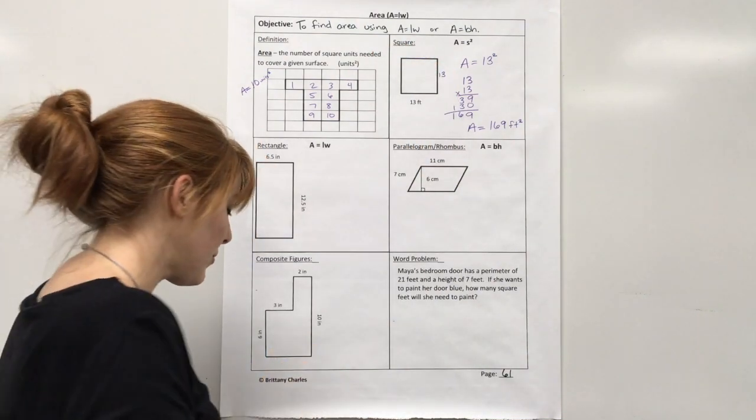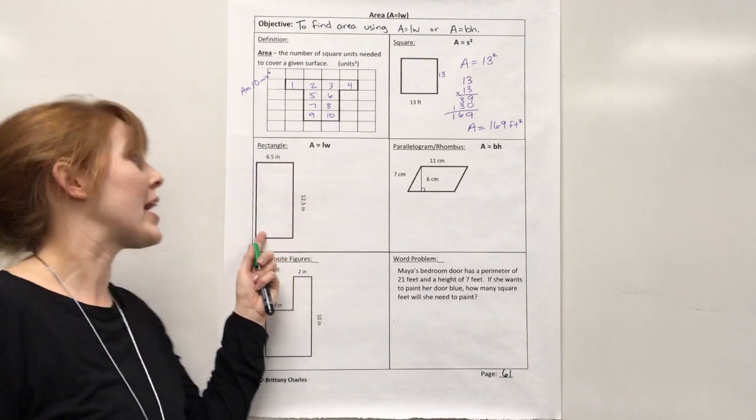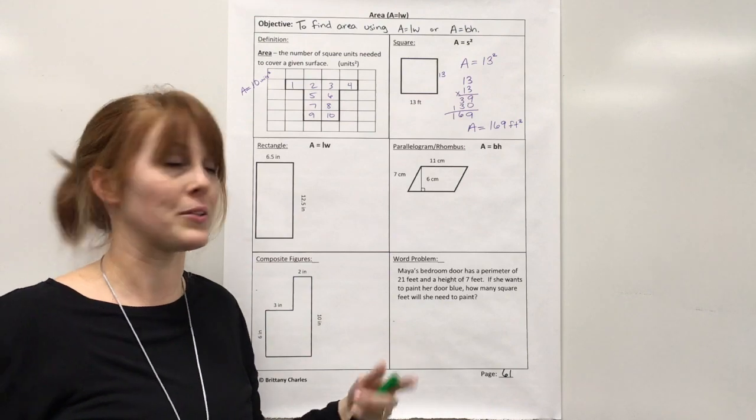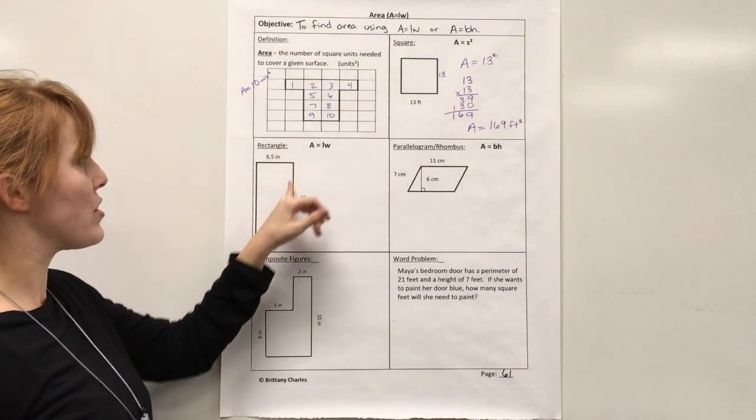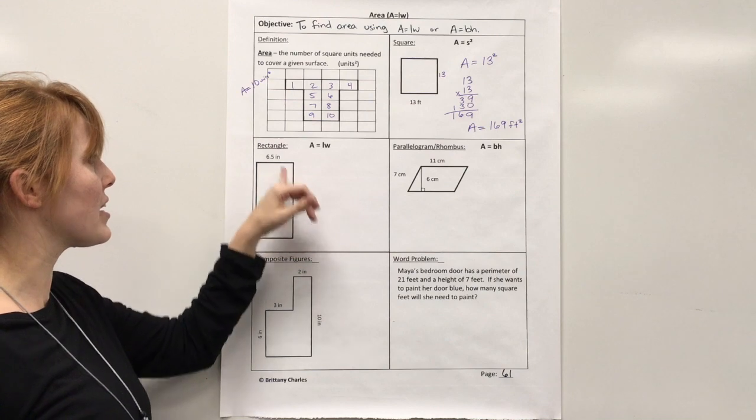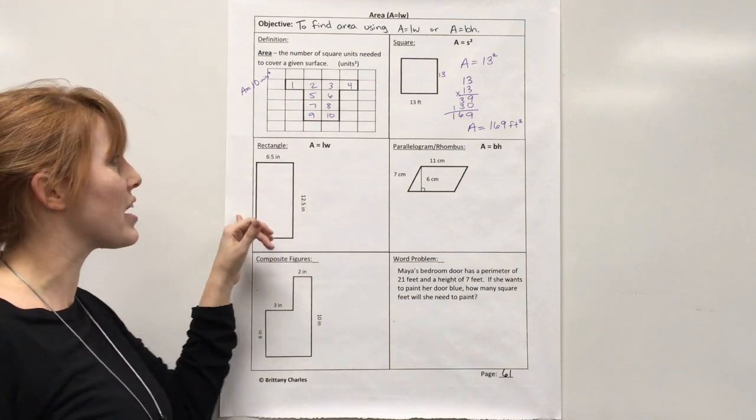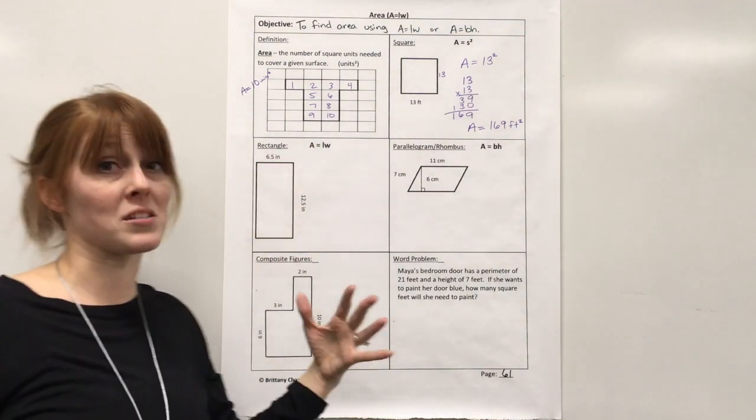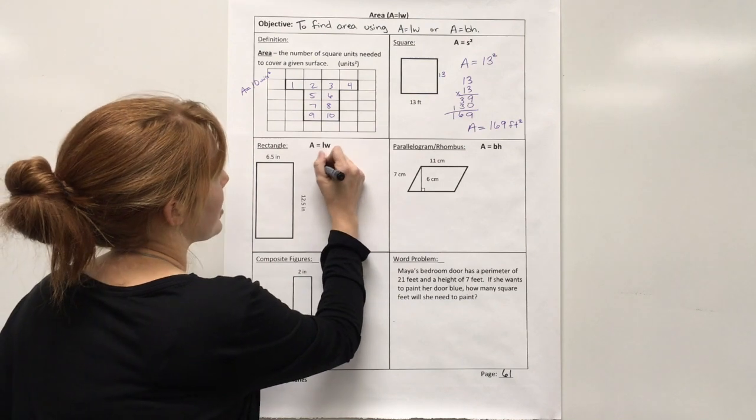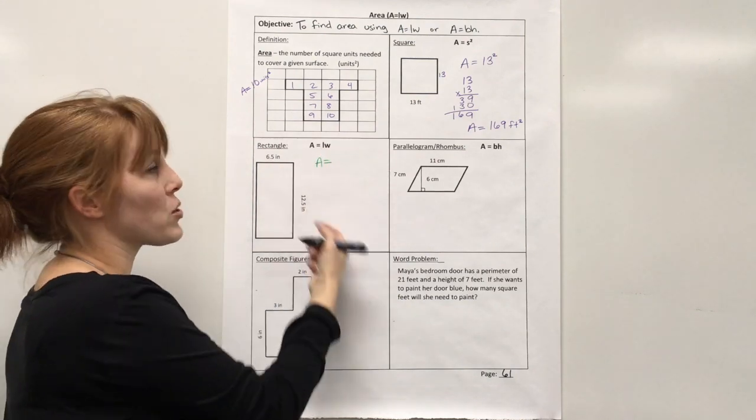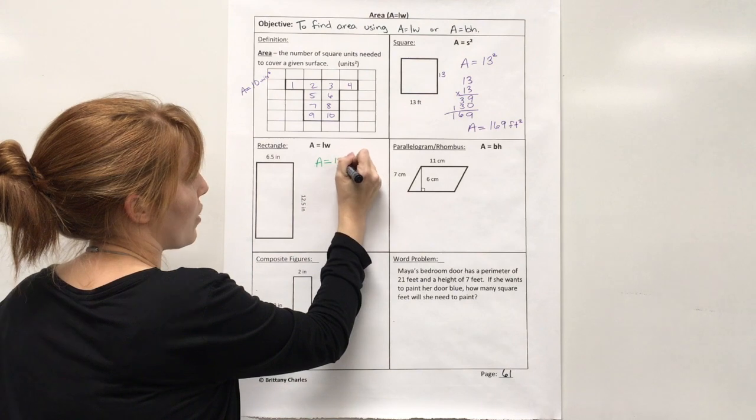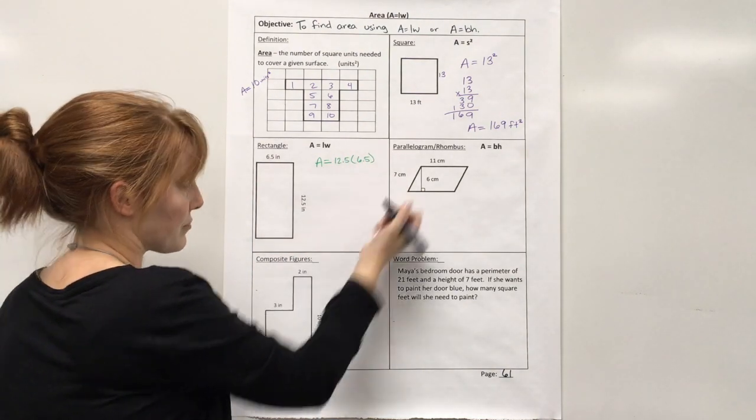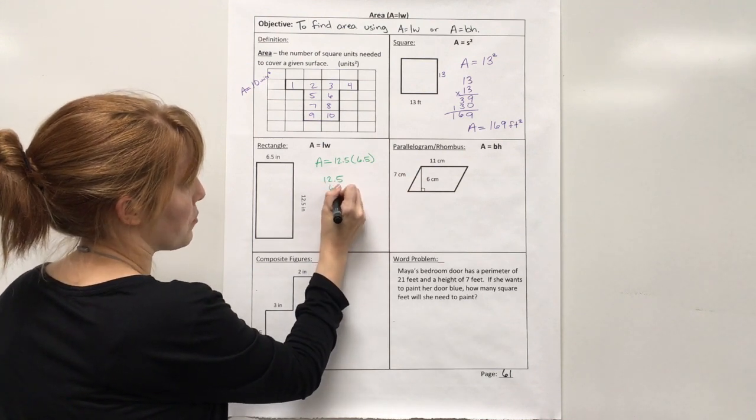Next one, we have a rectangle. And so again, we have length times width. We could also call this base times height. So when I look at this, I know that here I have one side, I have the other side. I know that these are the same, and these are the same. But really, since it's length times width, I just need to multiply these. And I have decimals, so we need to be careful. So area equals, it doesn't really matter which one I call the length, so I'm just going to call 12.5 the length and 6.5 the width.